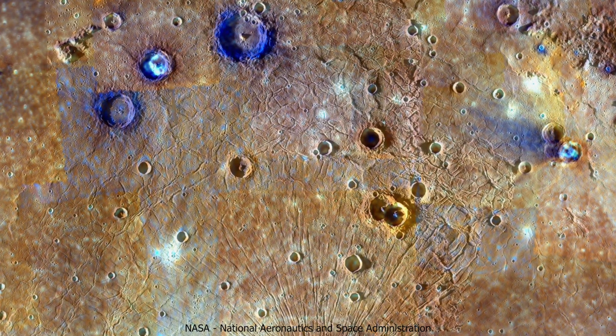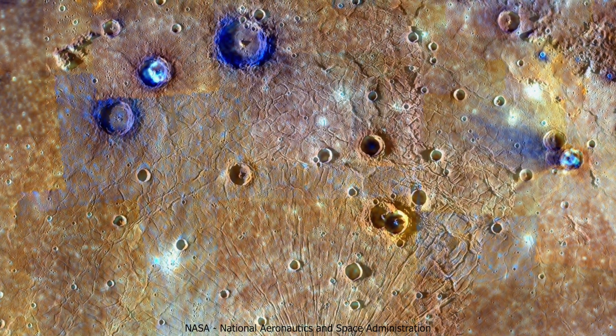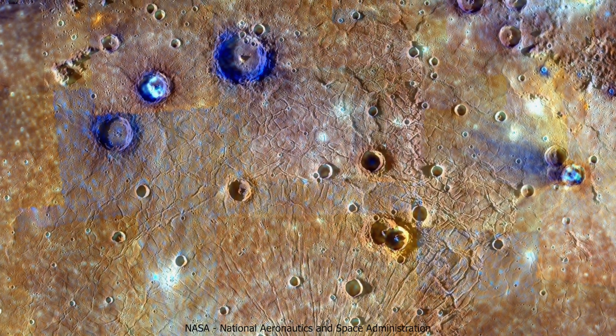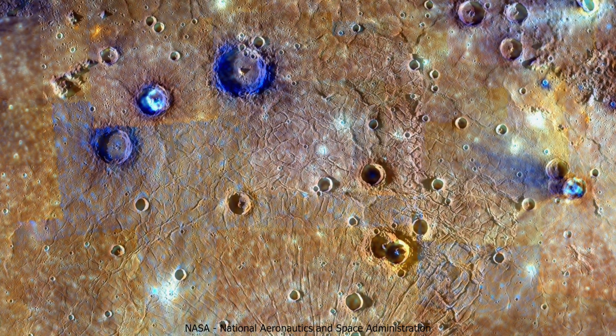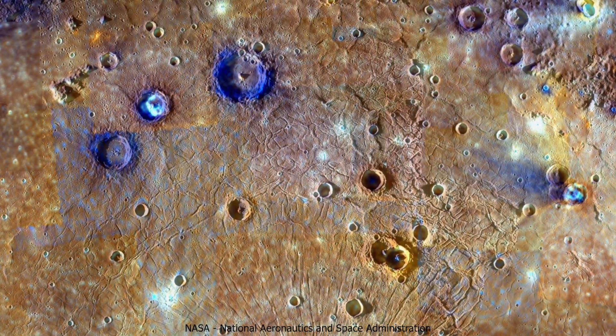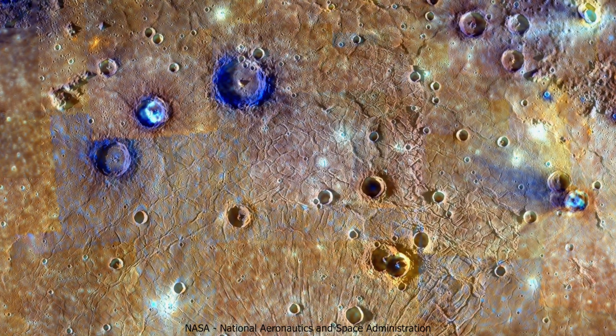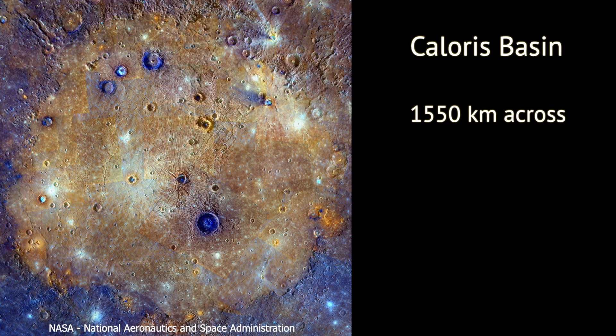Caloris Basin is the largest crater on Mercury and its most distinctive feature. Images like this, in which differences in color have been exaggerated, make its perimeter stand out. Can you tell which crater it is? Actually, I am cheating a bit. Everything you see in this image is half of Caloris Basin.